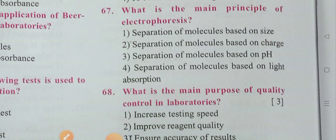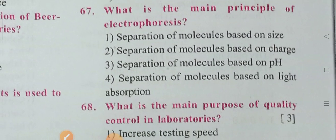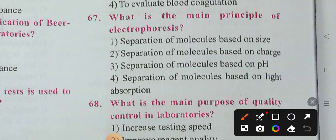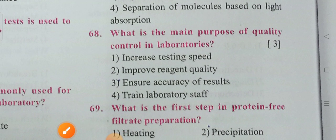Next question: What is the main principle of electrophoresis? Options include separation of molecules based on charge, based on pH, and based on light absorption. Option 2 is the correct answer — separation of molecules based on charge. Next question: What is the main purpose of quality control in the laboratory? The correct answer is to ensure accuracy of results.